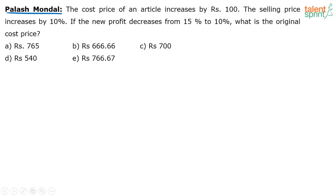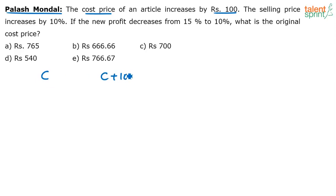Just go through this in a step-by-step process. There are only two equations you need to understand clearly. The cost price has increased by 100, so the original cost price is C and the new cost price is C plus 100. Let's assume the original selling price is S. The new selling price will be 1.1S.